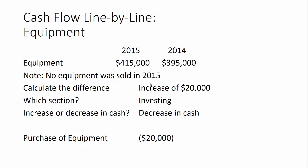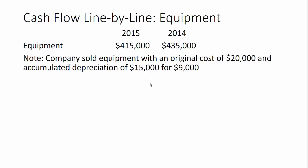That's a really simple example when you're just purchasing equipment, but let's look at what this would look like if we sold some equipment. In this example, the equipment balance went down, and there's a note that says the company sold equipment with an original cost of twenty thousand dollars and accumulated depreciation of fifteen thousand for nine thousand dollars. So we paid twenty thousand, depreciated it fifteen thousand, and sold it for nine.